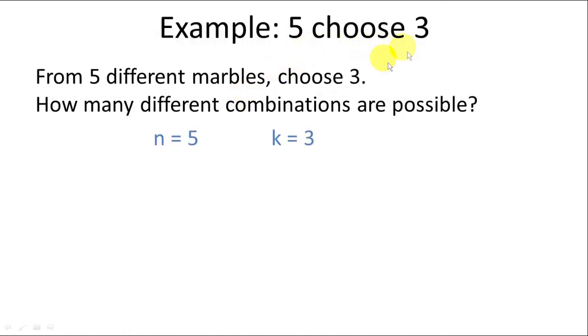So back to our five choose three problem. From five different marbles choose three. How many different combinations are there? So n equals five here because there are five different possible marbles. And k equals three because we need to choose three.